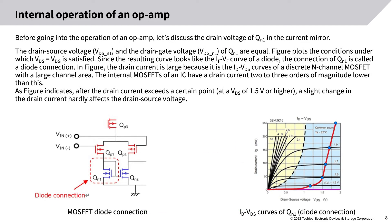Before discussing the operation of an op amp, let's discuss the drain voltage of QN1 in the current mirror. The drain-source voltage VDSN1 and the drain-gate voltage VDGN1 of QN1 are equal. The figure plots the conditions under which VDS equals VDG. Since the resulting curve looks like the I-V curve of a diode, the connection of QN1 is called the diode connection. The internal MOSFETs of an IC have a drain current 2 to 3 orders of magnitude lower than that of a discrete N-channel MOSFET. As the figure indicates, after the drain current exceeds a certain point, at a VDS of 1.5 volts or higher, a slight change in the drain current hardly affects the drain-source voltage.